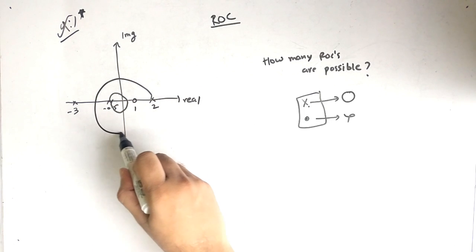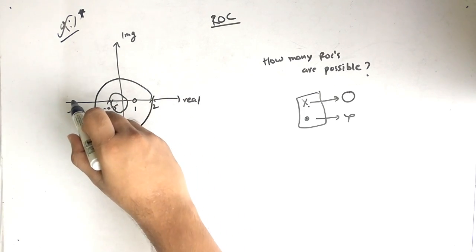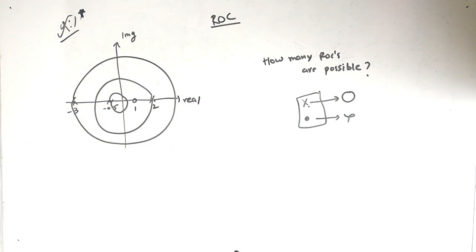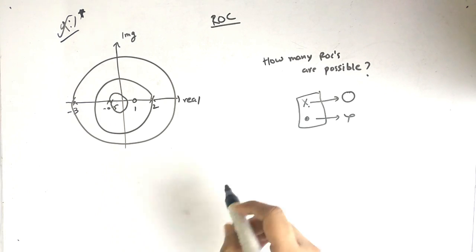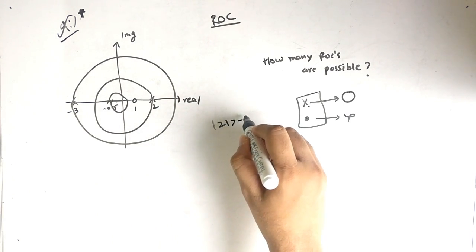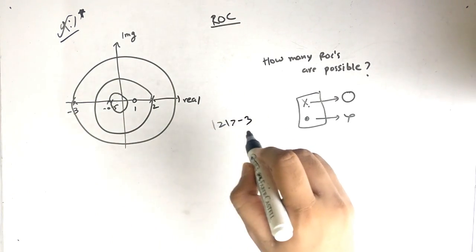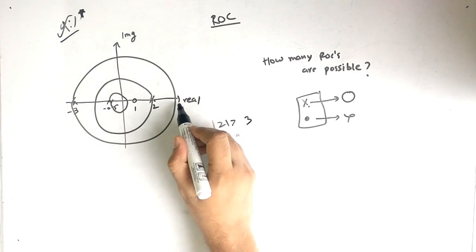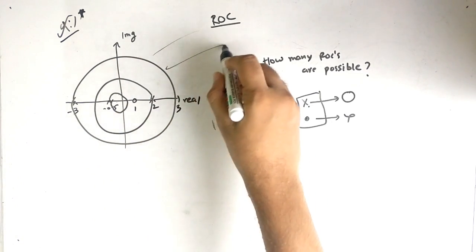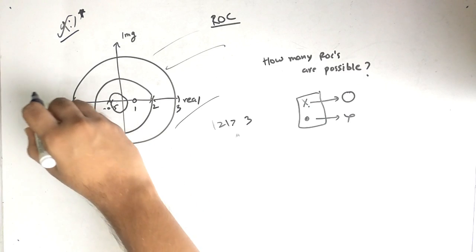So from the pole at 2 we will draw a circle, and from the pole at 3 (i.e., ±3) we will draw a circle. We have to cover the whole graph. The first possible region is |z| > 3 — if the poles are at ±3, then |z| > 3 is this outer region.